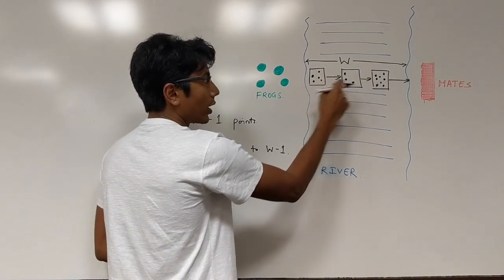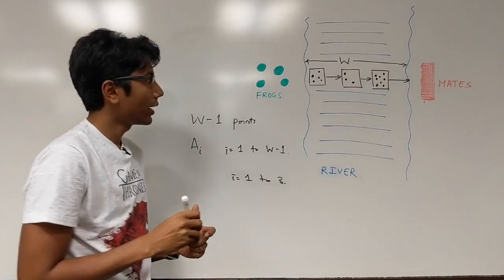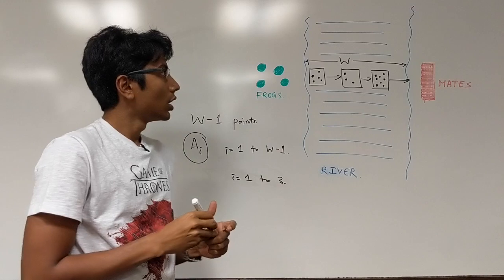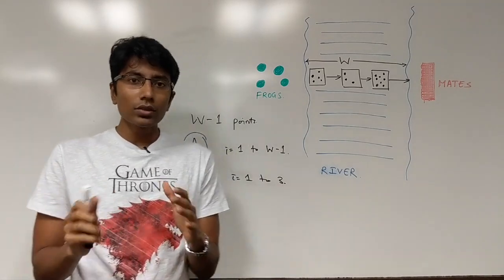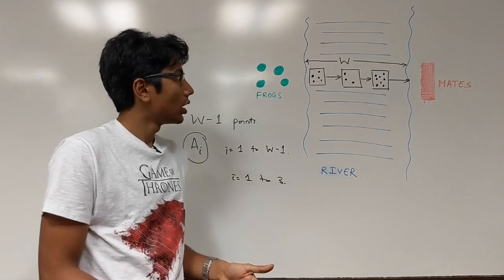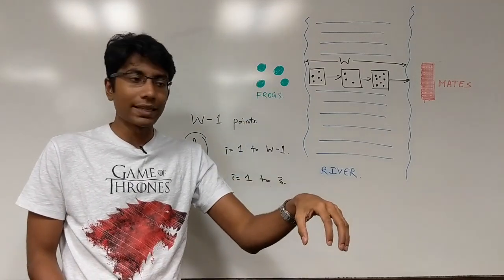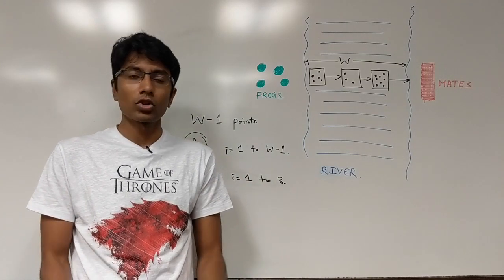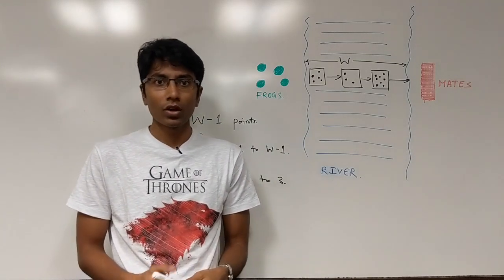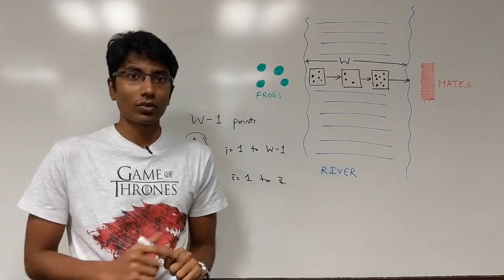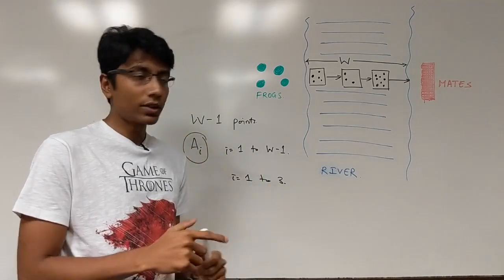You can see this is A_1, A_2, and A_3, and on each point it has A_i stones. So the special thing about these stones is that the moment a frog jumps on these stones, on one of these stones basically, and it jumps out of it, that stone sinks into the river. So it can't be used by another frog. So one frog can use one stone at one time.